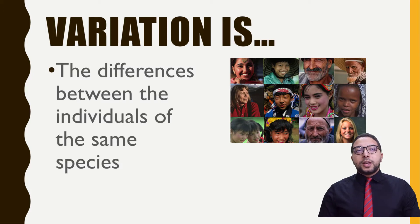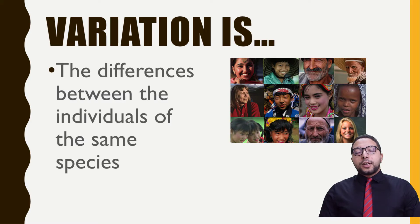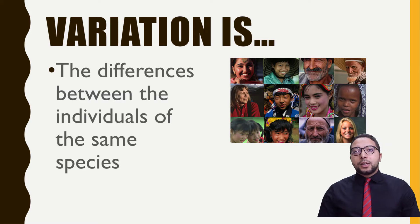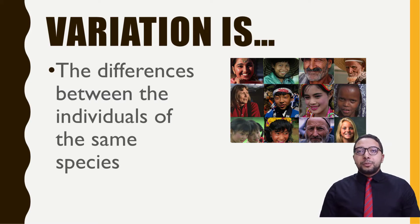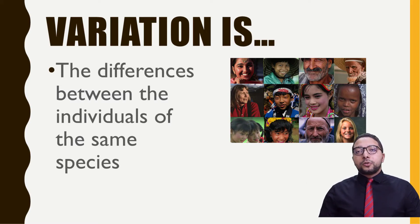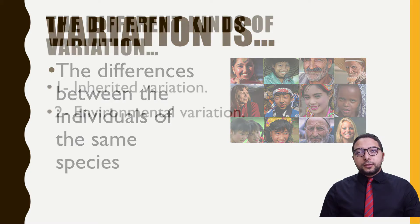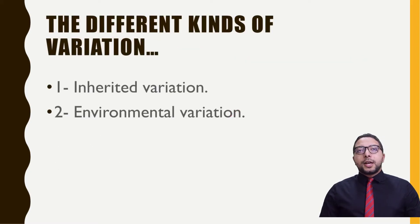We have taken variation and said that variation is the differences between individuals of the same species. As you can see in the picture, we have people with different skin colors, different eye colors, and different hair colors. All of these are called variation because these differences belong to individuals of the same species, which is called Homo sapiens.